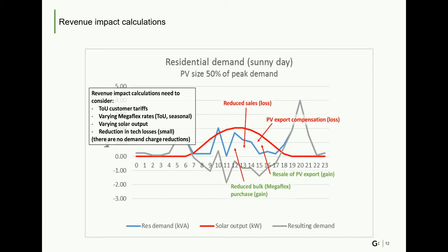The space between the red line and the blue line shows the electricity exported by the customer onto the grid which needs to be purchased by the municipality. There is a loss to the municipality as it needs to pay for the electricity. However, there is also a gain if it pays less than the ESCOM purchase price for this power. The box in the chart highlights the elements that need to be considered when calculating the revenue impact on municipalities: time of use tariffs, the megaflex rates, the solar PV output, and the reduction in technical losses. Note that the introduction of solar PV shouldn't affect the demand charges paid by customers to the municipality, based on the assumption that in every month there will be at least one cloudy day.